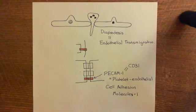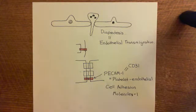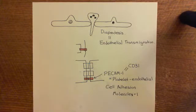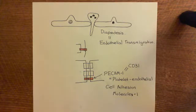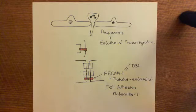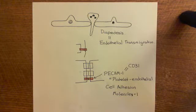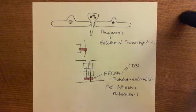Welcome back to this next video in which we are discussing leukocyte extravasation. We've now looked at type 1 activation of endothelial cells and how this can result in neutrophil extravasation from the bloodstream. What we're now going to look at is type 2 activation of endothelial cells, how this can result in another way by which neutrophils can be extravasated from the bloodstream, and also how we can recruit monocytes from the bloodstream, which are the precursors to macrophages.